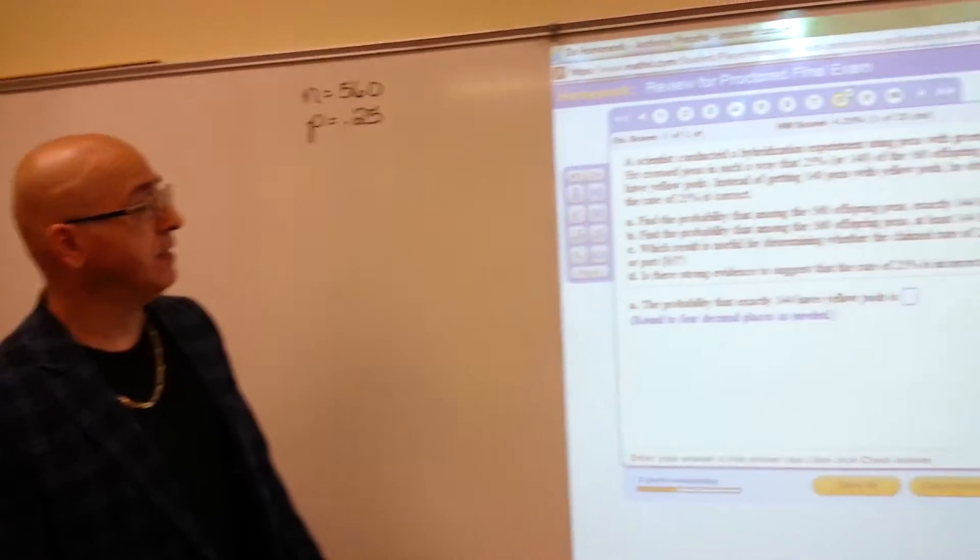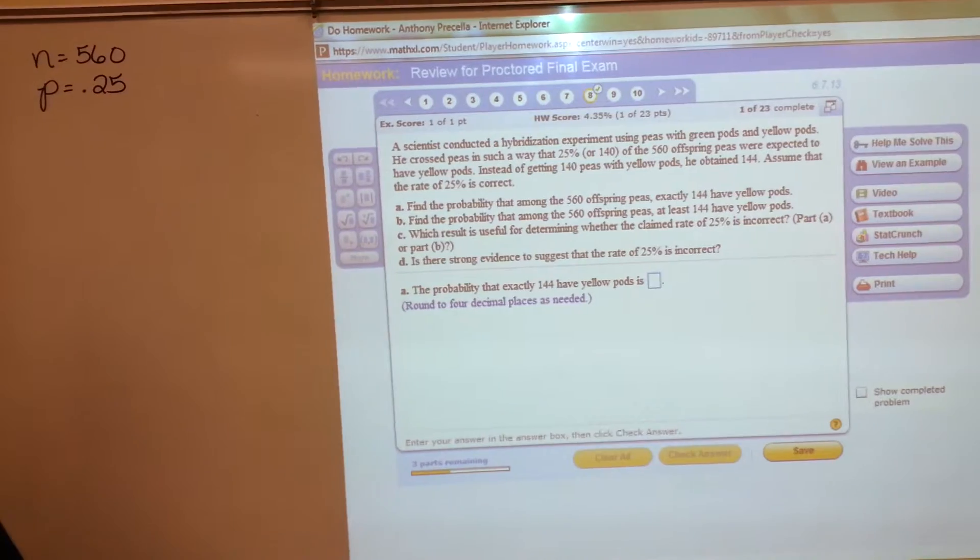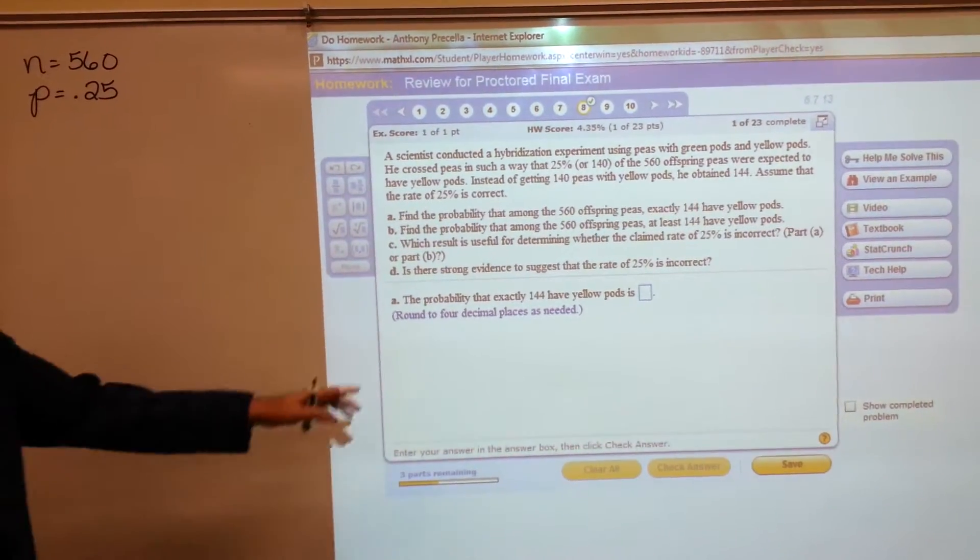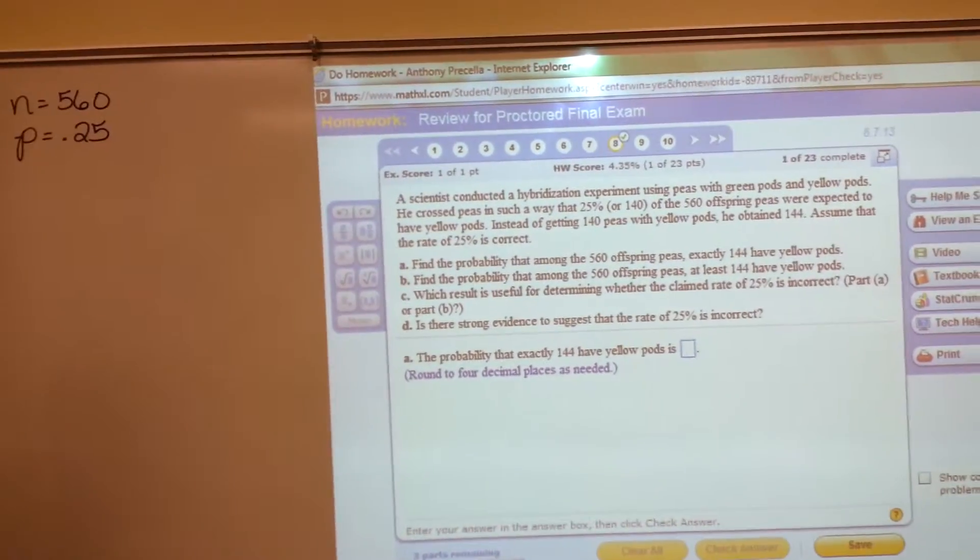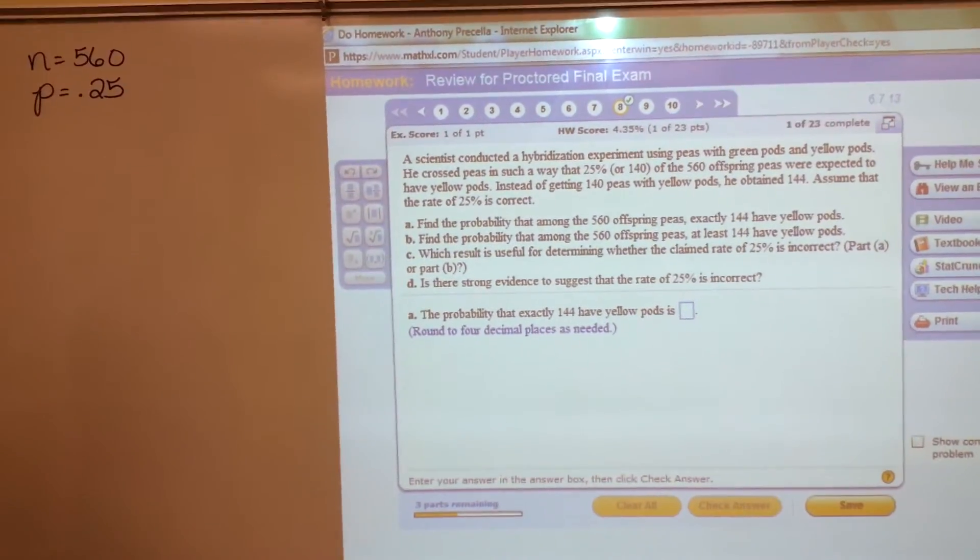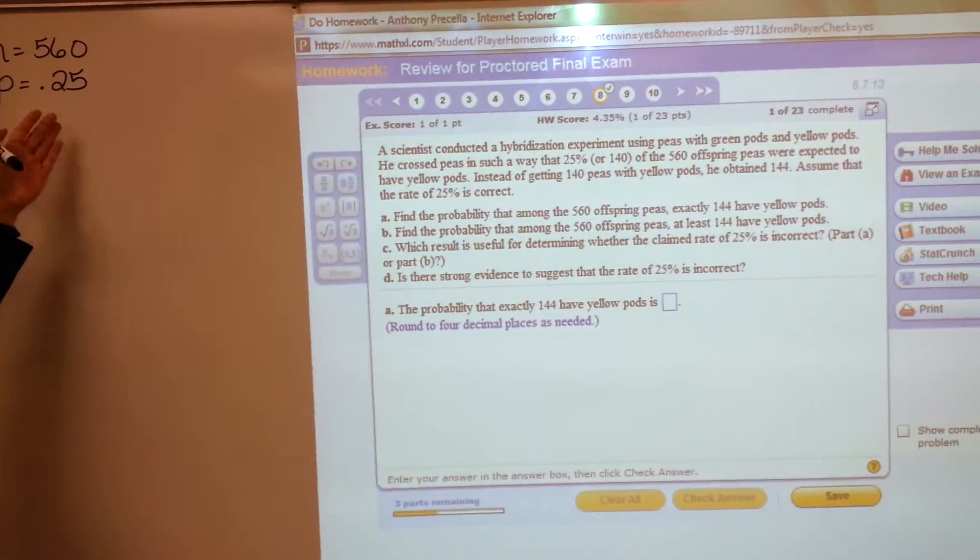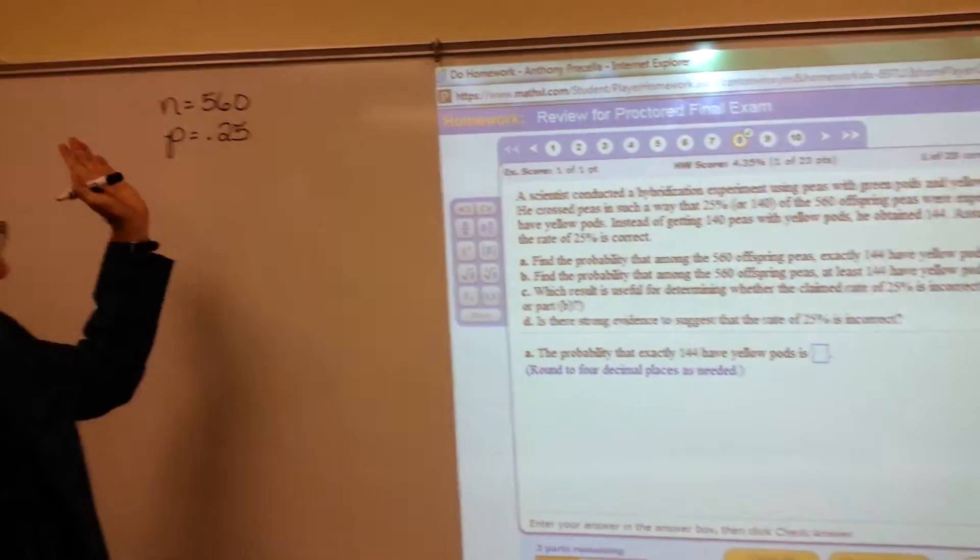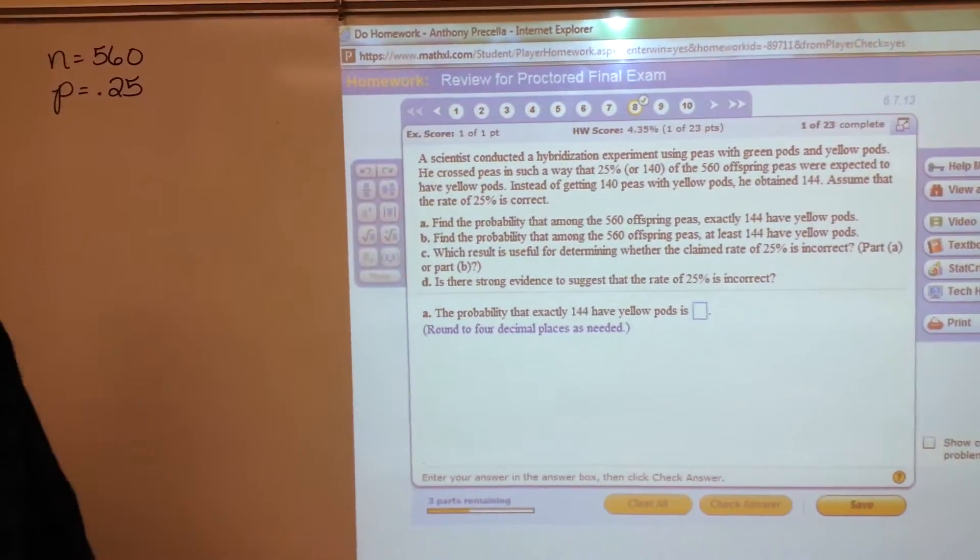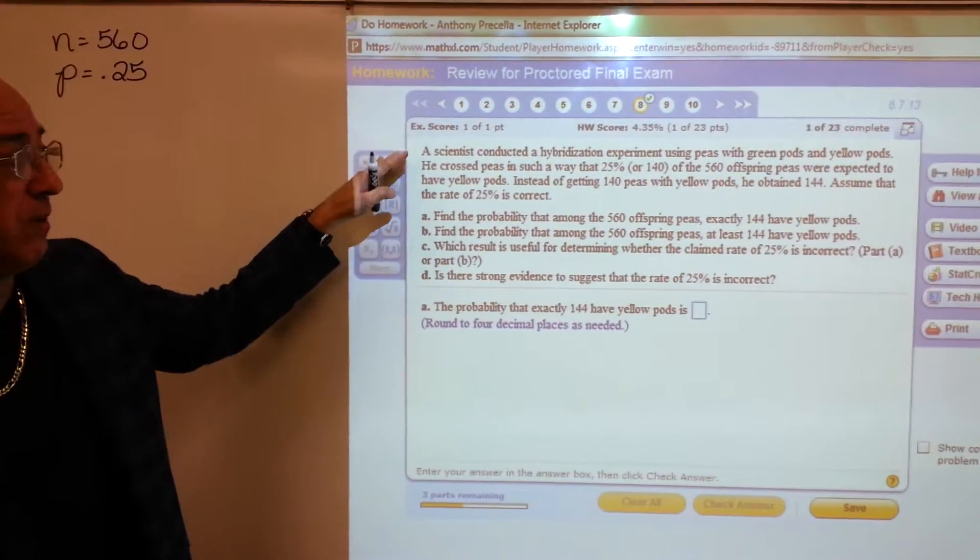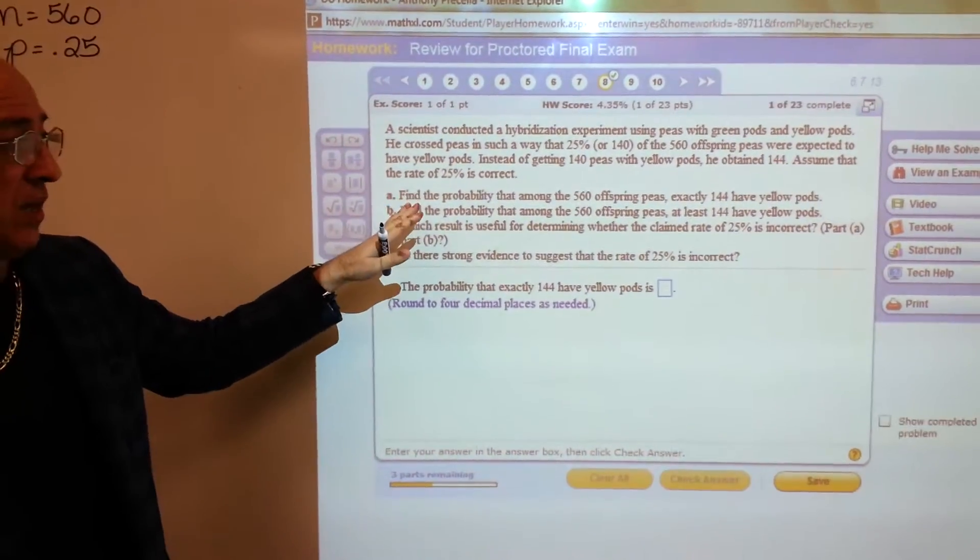A scientist conducted an experiment using green pods and yellow pods. He crossed peas in such a way that 25% of the 560 peas were expected to have yellow pods. It tells you that N times P is 140. Q would be 0.75, so N times Q is certainly bigger than 140, which means we could use a normal distribution to approximate this. But we're going to use binomial.